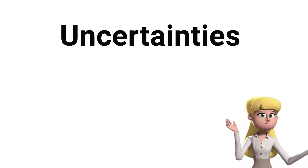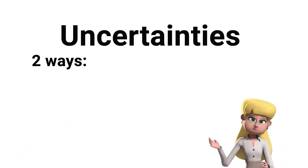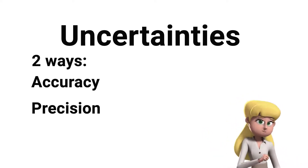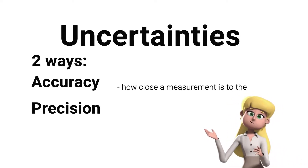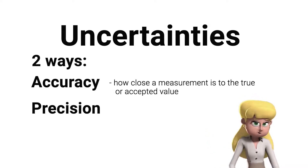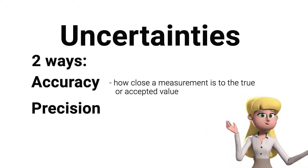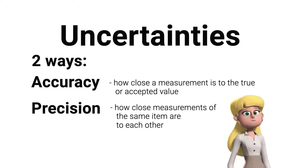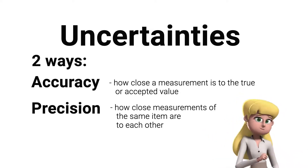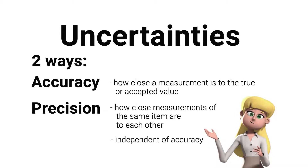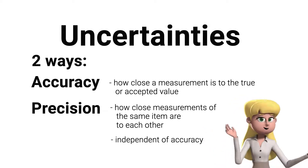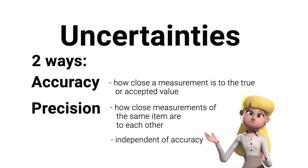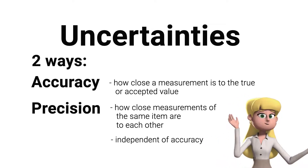Moving on to uncertainties — there are 2 ways to think about an error: accuracy and precision. Accuracy refers to how close a measurement is to the true or accepted value, while precision refers to how close measurements of the same item are to each other. Precision is independent of accuracy. That means it is possible to be very precise but not very accurate, and it is also possible to be accurate without being precise.